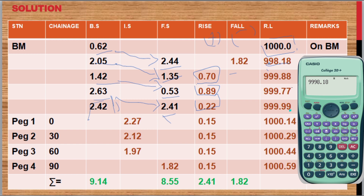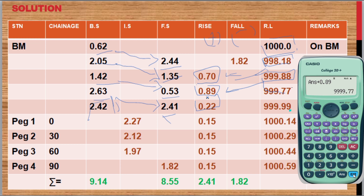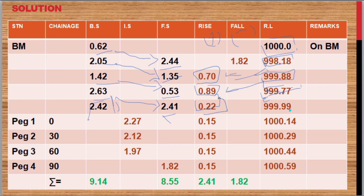Adding 0.7 gives the reduced level of that position. Again, adding 0.89 to 999.88 gives 999.77. Lastly, adding the rise value of positive 0.22 gives 999.99 — that is the reduced level found there.